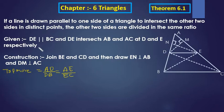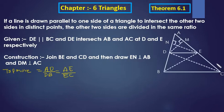Before doing this, we have to do some construction. Join BE, join CD. Draw perpendicular EN to AB — that is, EN perpendicular to AB — and DM perpendicular to AC. These are the two perpendiculars. It is given that DE is parallel to BC, and DE intersects AB at D and AC at E.